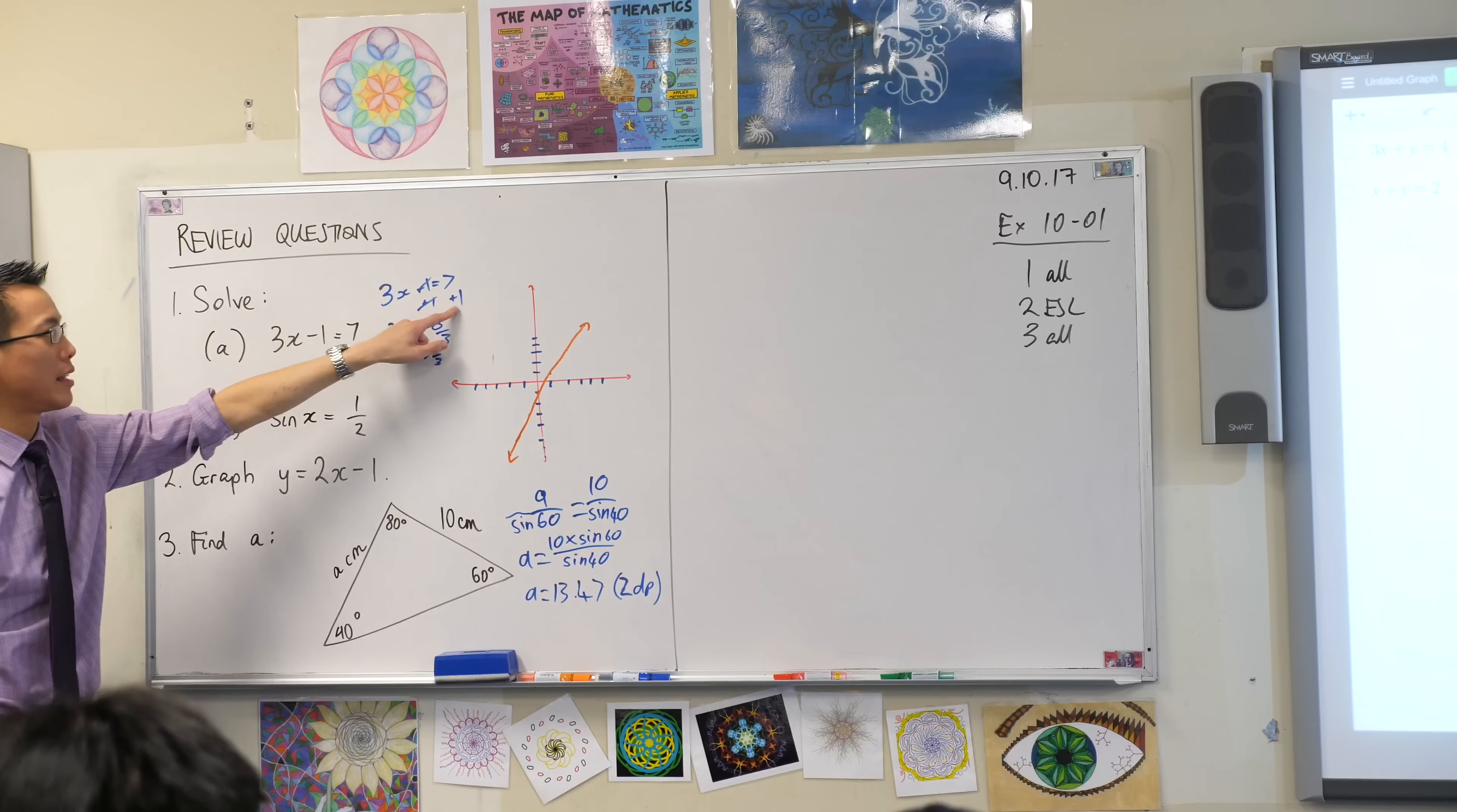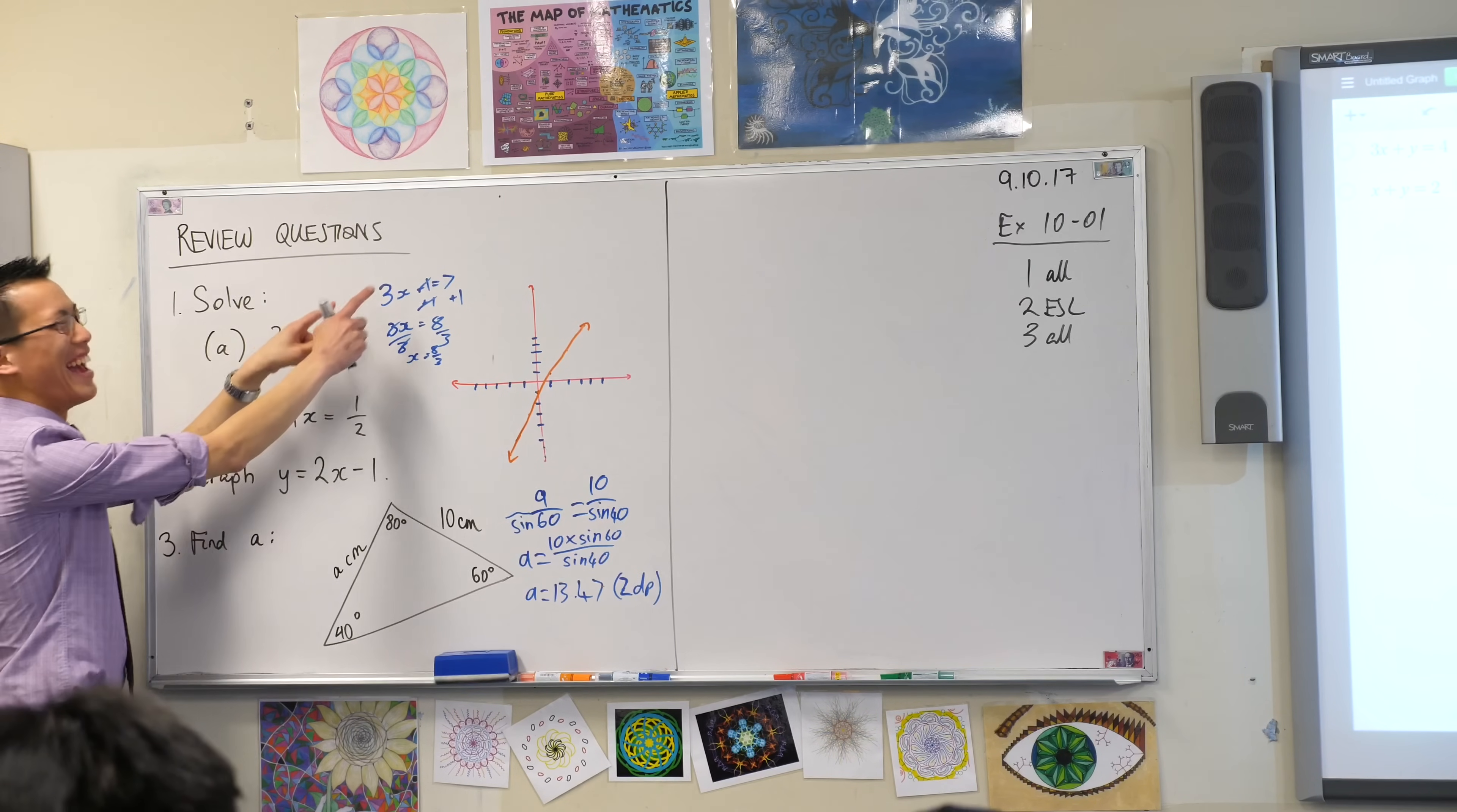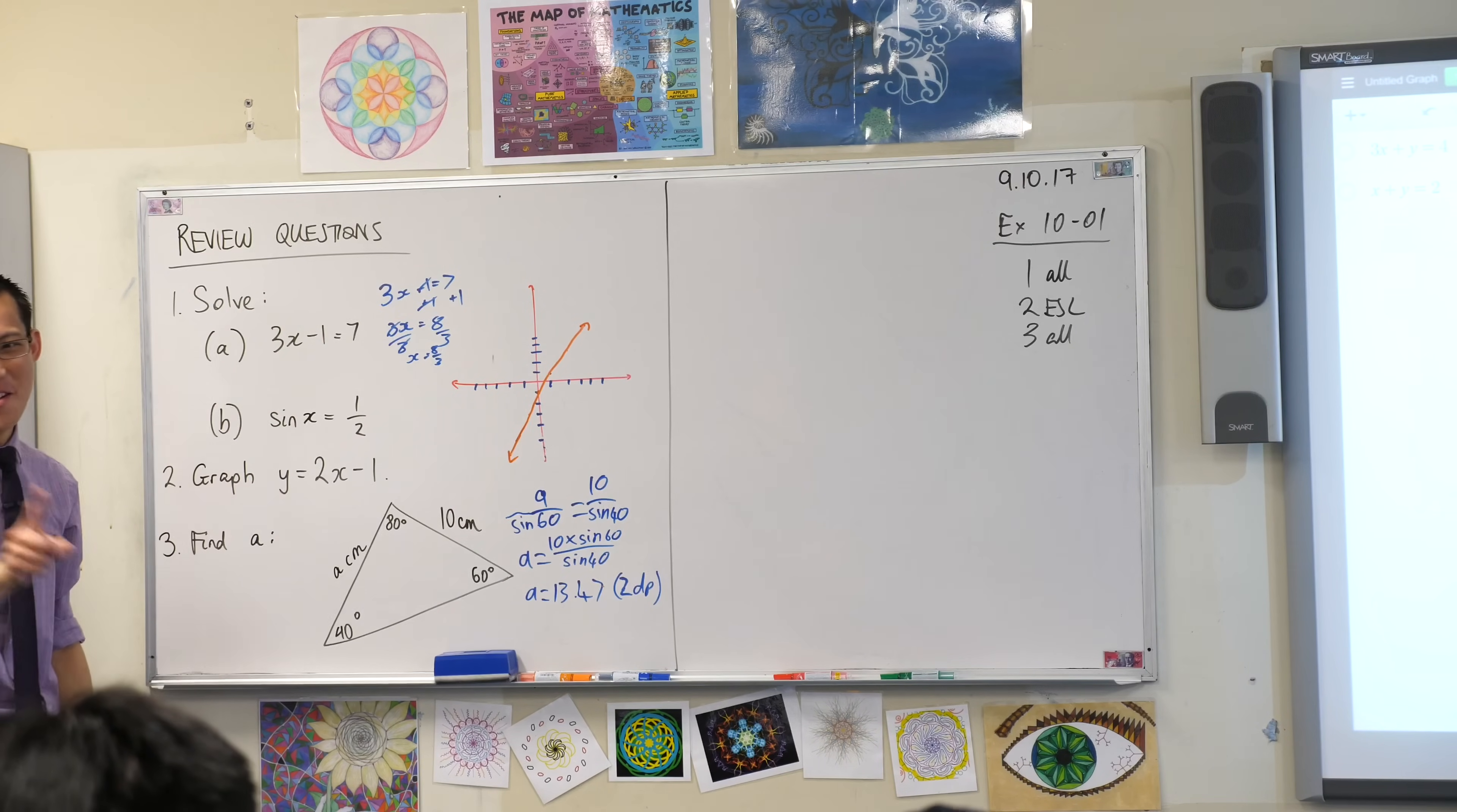What's the very first thing that he's done on the first line? You can see it. That's cheeky. He's added one to both sides. He's added one to both sides. No numbers have moved anywhere. He's added one to both sides.